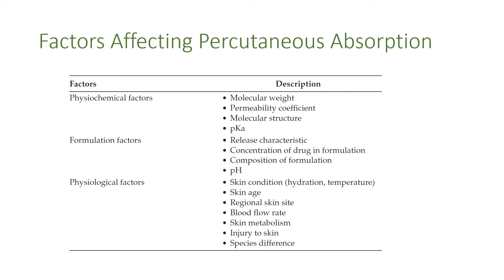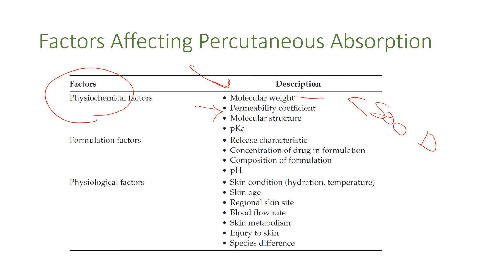Regarding the factors affecting percutaneous permeation, some factors are physicochemical — referring to the drug itself. The molecular weight should be less than 500 Daltons. The permeability coefficient should be high — it is a constant for each drug but differs between drugs. The chemical structure is very important because it controls the pKa (ionization constant) and log P (partition coefficient) of the drug.